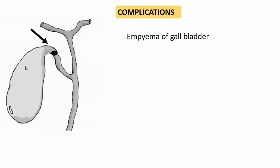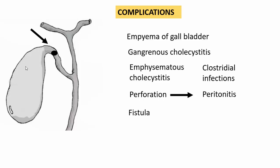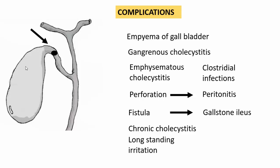If acute cholecystitis is not recognized and treated, acute inflammation increases with dense neutrophilic infiltration, the bile becomes infected and purulent, and the entire gallbladder fills with pus — a condition called empyema of the gallbladder. Continued inflammation with congestion, necrosis, and superinfection can result in gangrenous cholecystitis. Clostridial infection can cause emphysematous cholecystitis. Perforation may lead to peritonitis, and fistula formation can rarely lead to gallstone ileus. Repeated mild acute inflammations can result in chronic cholecystitis, and long-standing irritation can result in carcinoma of the gallbladder.